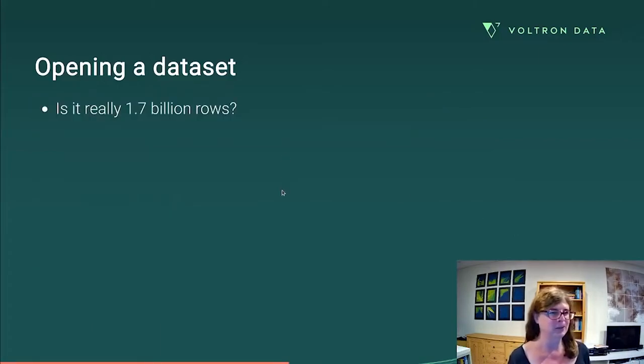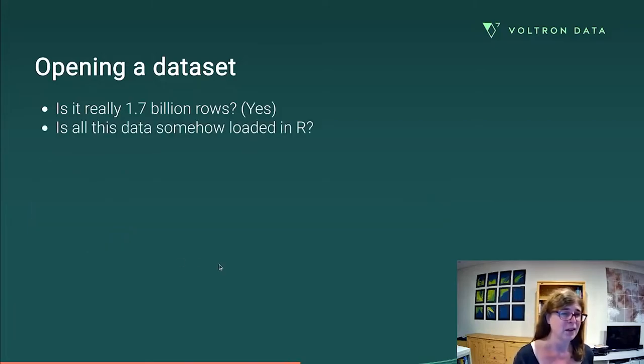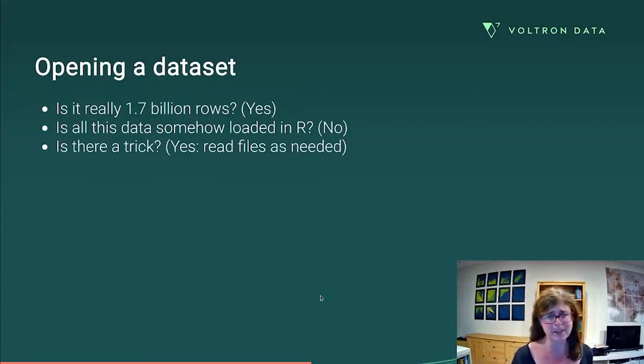Just to check, do we really have 1.7 billion rows? So I can take that data set and pipe it to the nrow function. And yes, it does tell me there's 1.7 billion rows of data. Have I somehow managed to defeat the laws of physics and the size of my laptop memory and loaded this into R? I absolutely have not. So if I use the obj size function from the lobster package, you can see it's only about 260 kilobytes in size. Like I've loaded some metadata, not the whole thing. Cool. Is there a trick? Of course there's a trick. Like the trick here is just you read the files, you read data as you need it. You don't try and store the whole thing in memory.